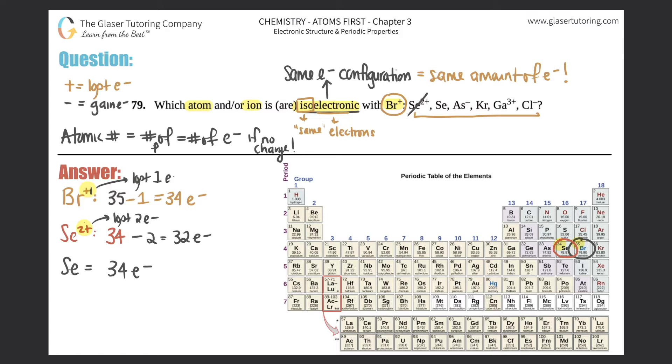Next: As-. Arsenic is right here, and arsenic has an atomic number of 33. Now it's telling us that it's a -1 charge, which means that you gained one electron. So 33 plus 1 is 34 electrons.